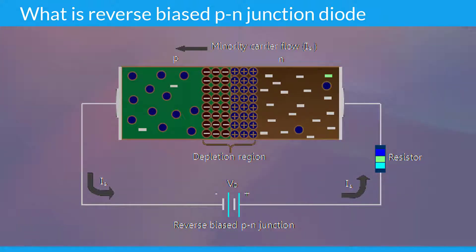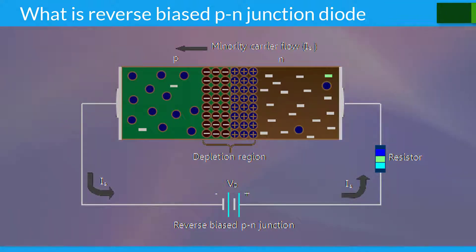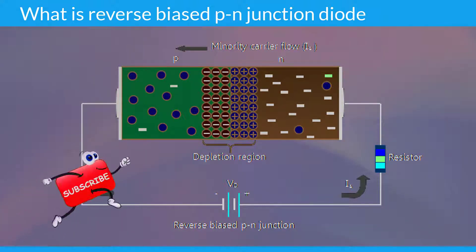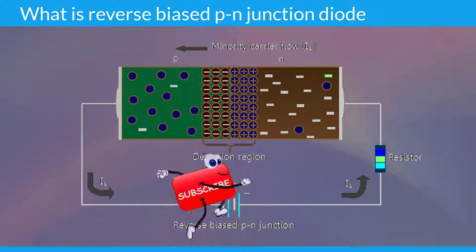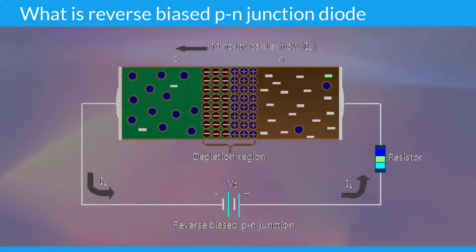Free electrons which begin their journey at the negative terminal find a large number of holes at the P type semiconductor and fill them with electrons. The atom which gains an extra electron becomes a charged atom, or negative ion, or motionless charge. These negative ions at the PN junction on the P side oppose the flow of free electrons from the N side.